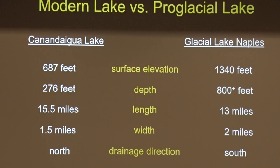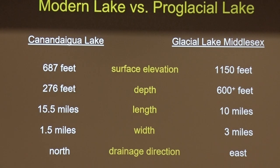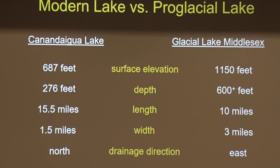The other lake we're going to look at is Glacial Lake Middlesex. Its surface elevation is about 190 feet lower — 1,150 feet compared to 1,340. Probably not quite as deep because the surface elevation has dropped. Probably about 10 miles long, three miles wide, and it drained east into the Italy Valley, Flint Creek, Potter Swamp area.